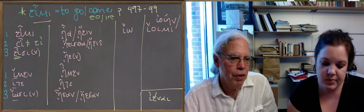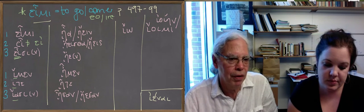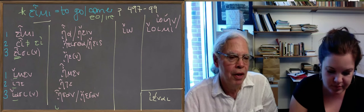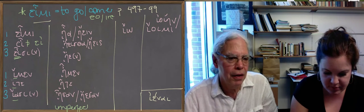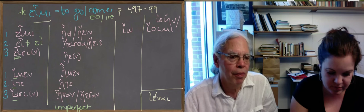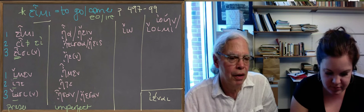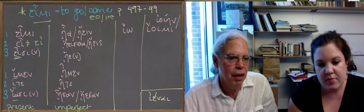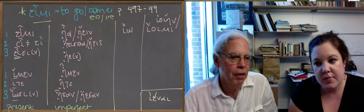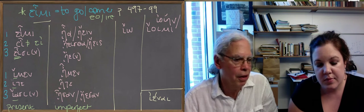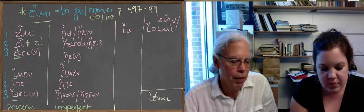If now we switch to the second column and look at the imperfect here, it looks like an ungodly mess. The first form is ᾖα. How do you get that out of εἶμι? Well, the way you do is that the root is ει. When you augment it, you get ηι subscript. You augment ει.